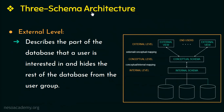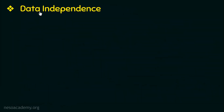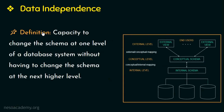With the concept of 3-schema architecture we can further explain the concept of data independence. Data independence can be defined as the capacity to change the schema at one level of a database system without having to change the schema at the next higher level. Without data independence, any changes at the internal level would require changing the higher levels too. But with data independence, changing the schema at one level does not affect the schema at higher levels.